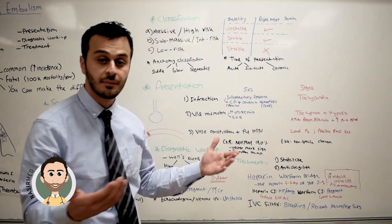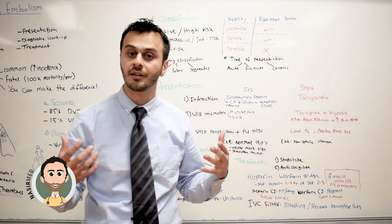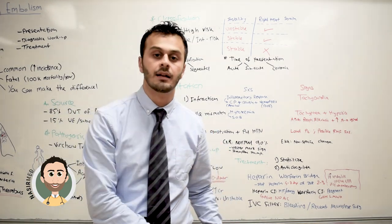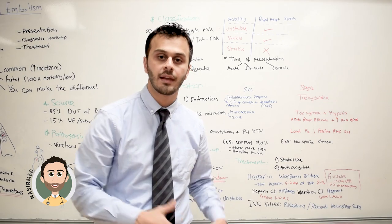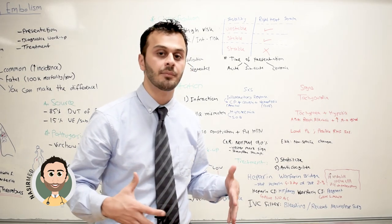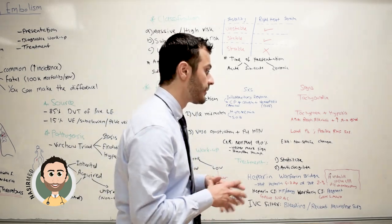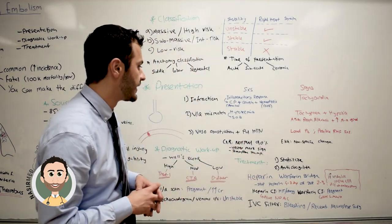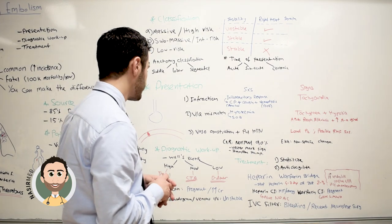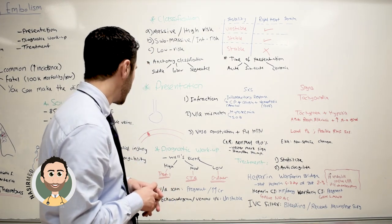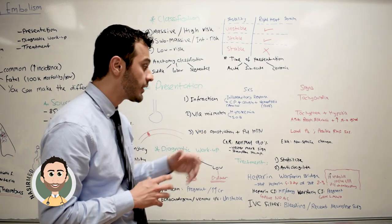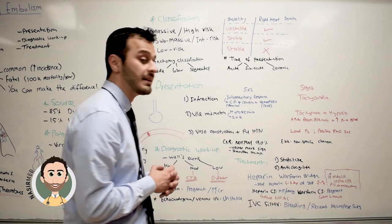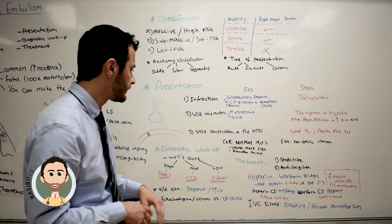Right heart failure symptoms include JVD, leg swelling, and abdominal distension — all of which the patient can present with, and are one indication that the pulmonary embolism is severe.